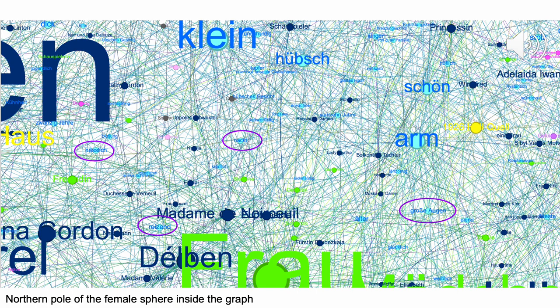A similar picture appears on the female side of the graph. Here we see 'lovely,' 'big eyes,' 'ugly,' and 'naked' as features a bit more frequent and often shared among female characters — but again, they are not very frequently used altogether. As we had the impression that characters are much less often described with overarching than with individual features, we took a step back from the huge graph and developed networks for each of the novels inside our corpus.